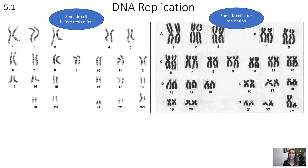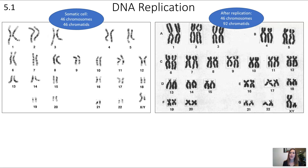On the left we see our somatic cell before DNA replication, and on the right we see the karyotype of the somatic cell after replication. Before replication, there are 46 chromosomes and each chromosome has just one chromatid — so 46 chromosomes and 46 chromatids total. After DNA replication, which occurs right before mitosis or meiosis, we still only have 46 chromosomes, but now each one has two chromatids — so 46 chromosomes and 92 chromatids.